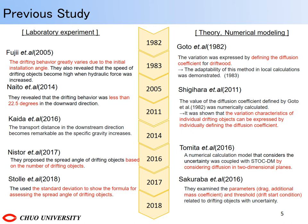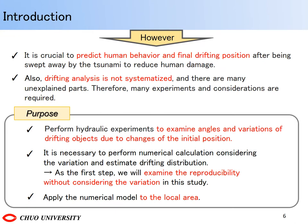From a field survey, Naito et al. found that the drifting behavior was within a range of 22.5 degrees in the downward direction. Nestor et al. proposed the spread angle of drift objects based on the number of them, and used the standard deviation to show the formula for assessing the spread angle of drifting objects. The prediction of human behavior and landing points after being swept away by the tsunami is essential to reduce human damage. Also, drift analysis is not systematized and there are many unexplained parts. Therefore, many experiments and considerations are required.